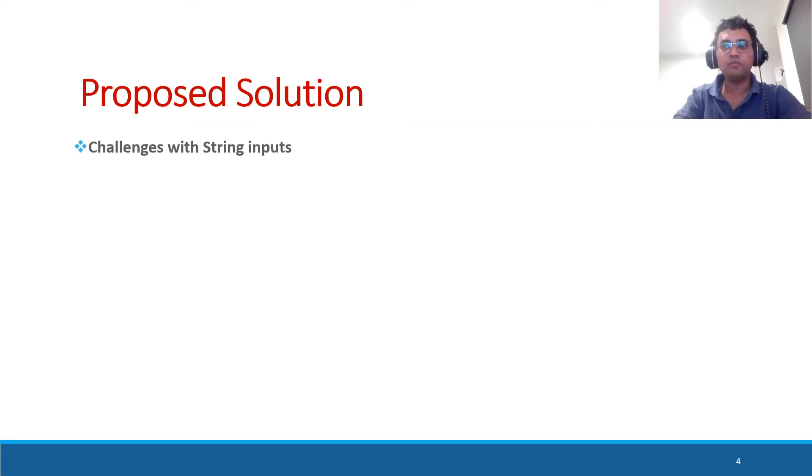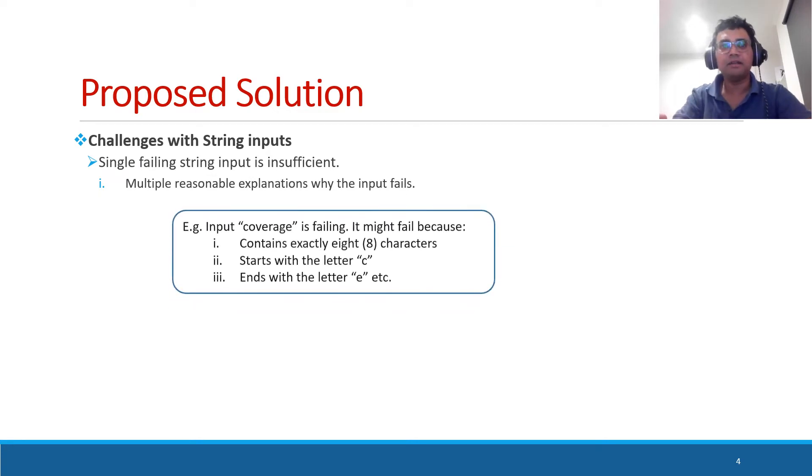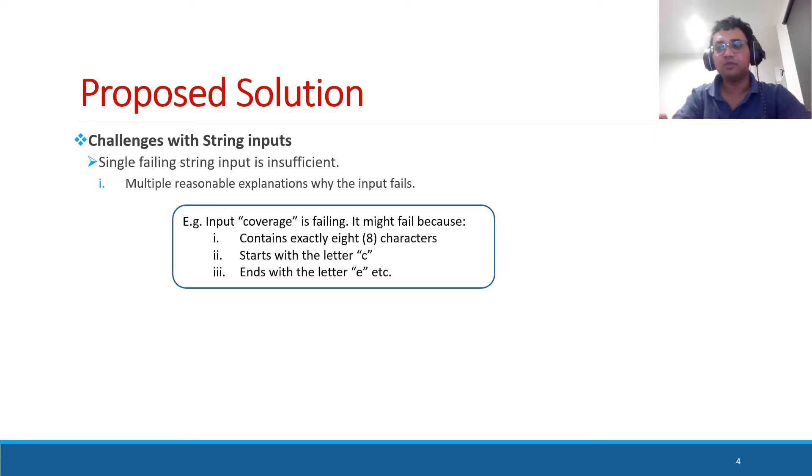To achieve our objective, we have to address few challenges associated with string inputs. Basically, single failing string input is insufficient to say why the program fails because a string can be interpreted in multiple ways. As an example, consider this failing input coverage. All these explanations are valid. But we don't know what is the explanation which better says the reason for the failure.